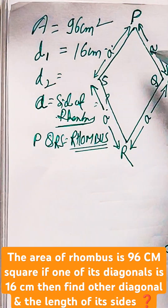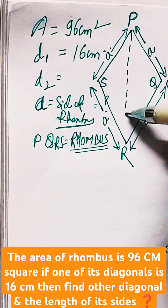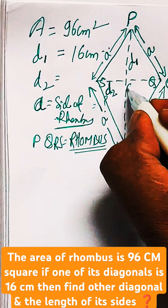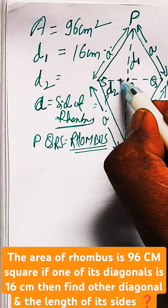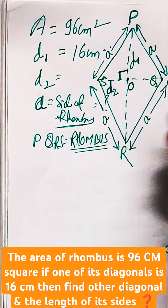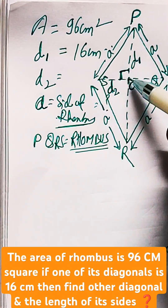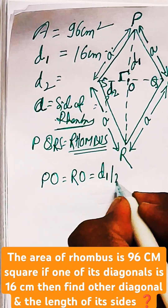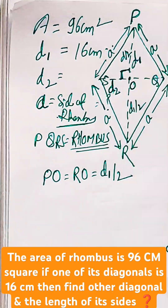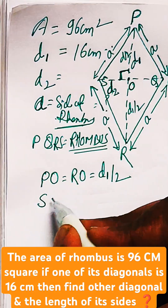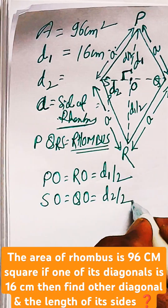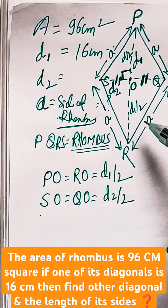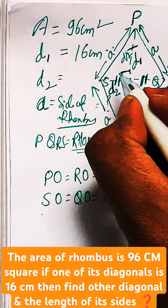We know the property of a rhombus: if the diagonals are d1 and d2 and they intersect each other at point O, then they intersect at 90 degrees and they bisect each other. So PO = RO = d1/2, and SO = QO = d2/2.